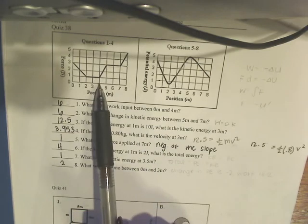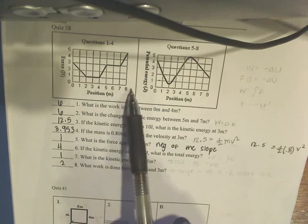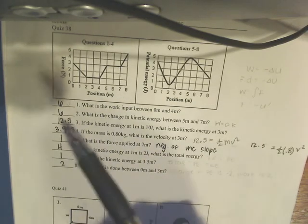Okay, so between 0 and 4, it's the area under the force graph, because work is the integral of force. The area is 6.